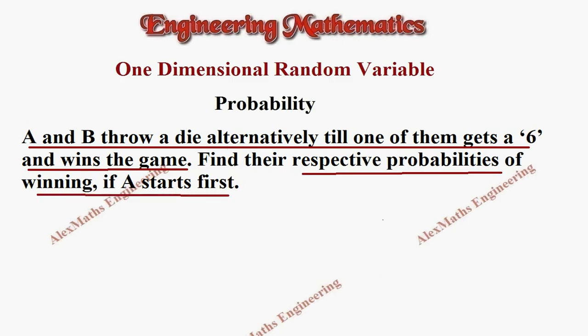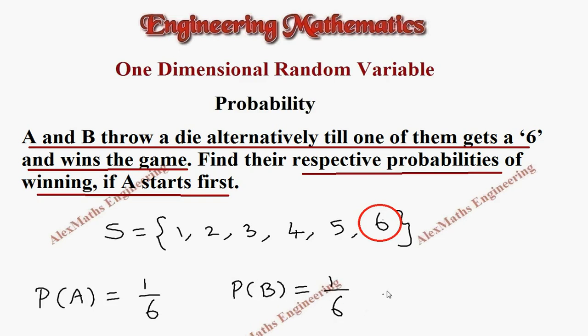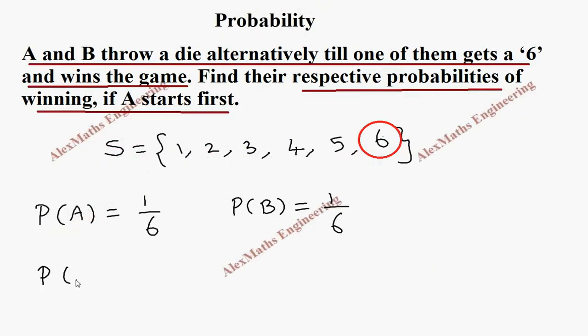When they throw a die, we know the sample space is 1, 2, 3, 4, 5, 6. Whoever gets the number 6 wins the game. The probability of A getting 6 is 1 by 6. In the same way, if B gets 6, the probability is also 1 by 6. If A gets any other number, P of A dash is 1 minus 1 by 6, which is 5 by 6. In the same way, P of B dash is also 5 by 6.